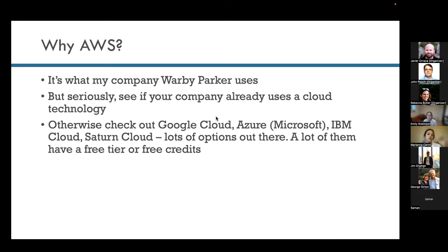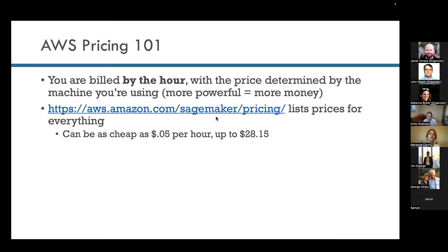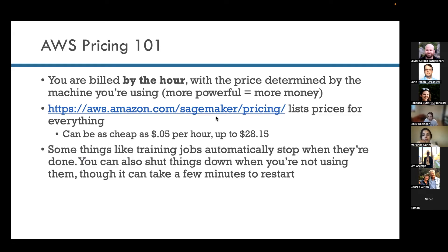I want to address one common issue that may stop people from getting started with the cloud: how does the pricing work, and am I going to end up with a $10,000 bill? A little pricing 101 for AWS: you are billed by the hour, and it's determined by the machine you choose. The pricing is pretty transparent — for SageMaker, you can see the prices for everything, ranging from 5 cents an hour up to $28 an hour. You cannot accidentally use a computer too much — it's a flat rate per hour whether you're actively using it or idling.